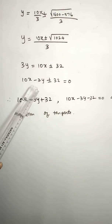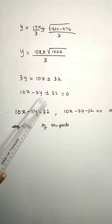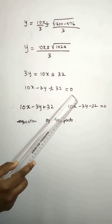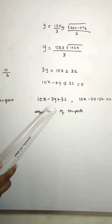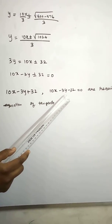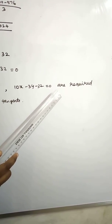So 10x minus 3y plus or minus 32 equal to 0. Therefore, 10x minus 3y plus 32 and 10x minus 3y minus 32 equal to 0 are the required equations of tangents.